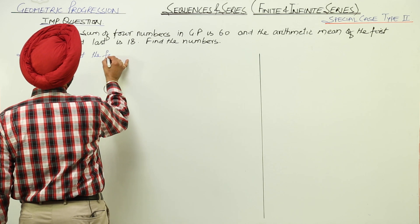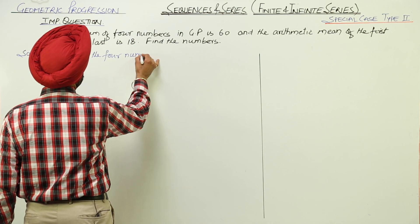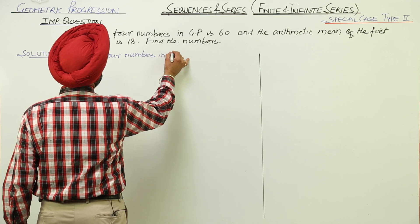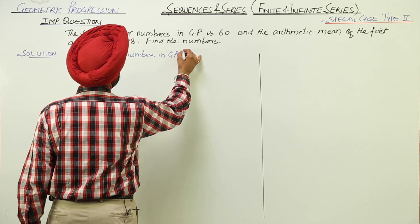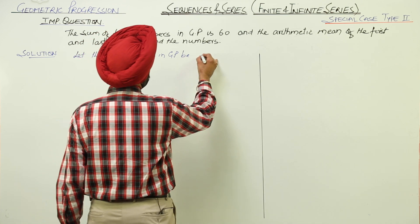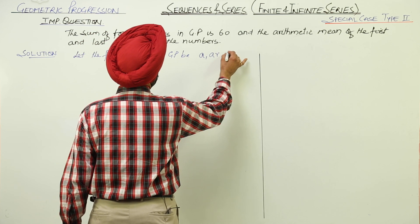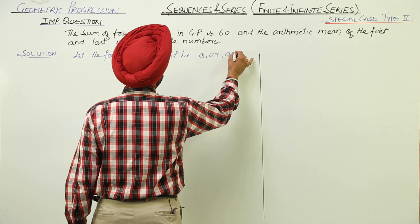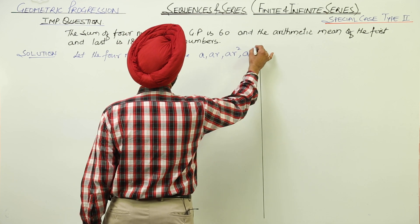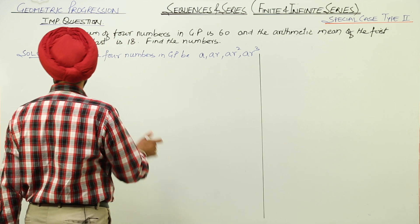Let the 4 numbers in GP be: a, ar, ar², and ar³. These are the 4 numbers.